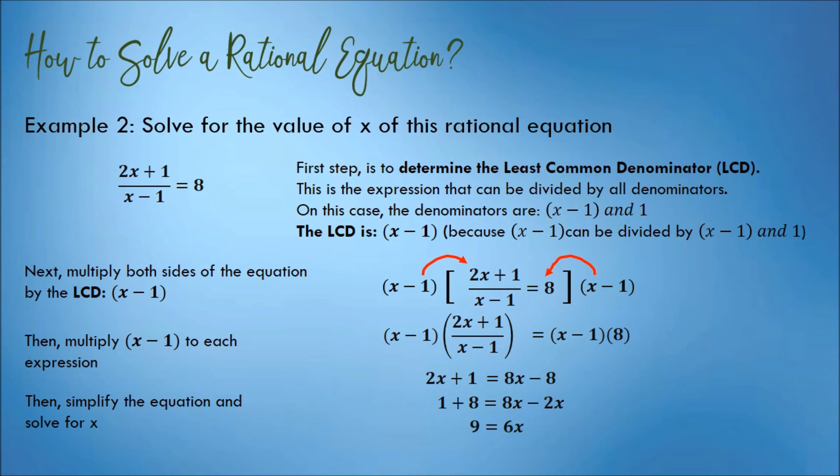1 plus 8 is 9, and 8x minus 2x is 6x. Divide both sides by 6. That will be x is equal to 9 over 6. Simplify the answer. The lowest term of 9 over 6 is 3 over 2.